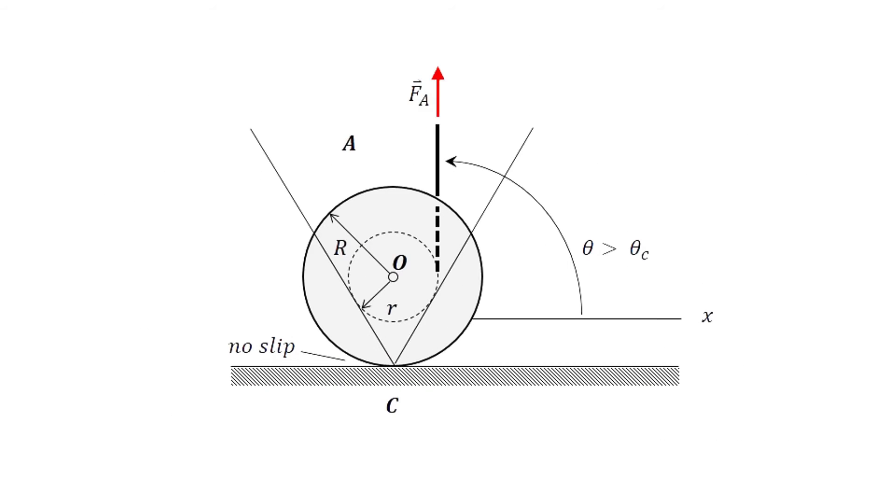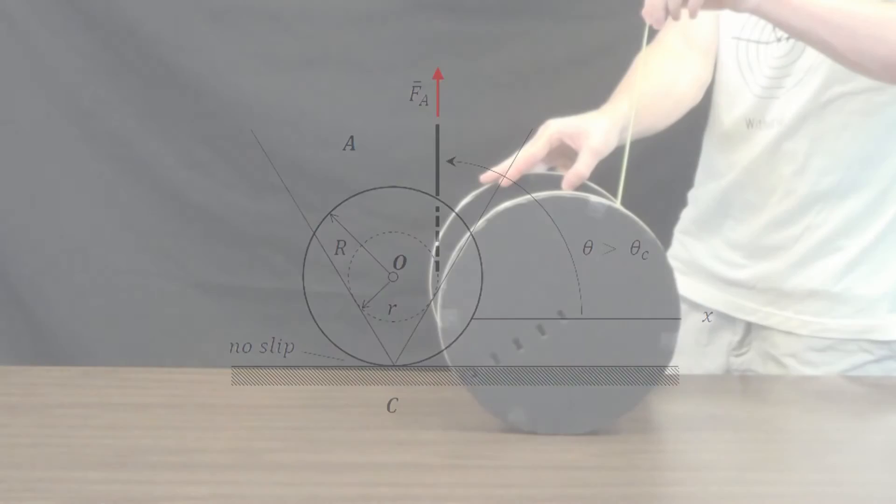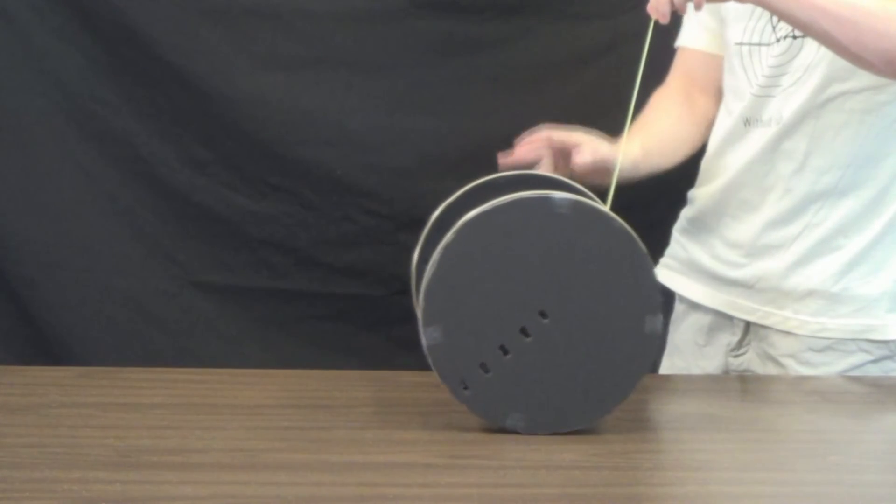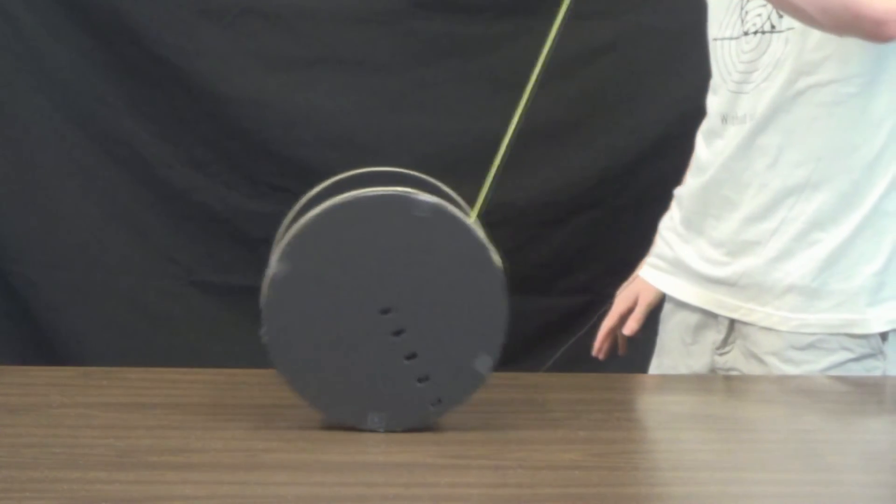The next test will be slightly above the critical angle. As I pull upwards and slightly to the right, the spool will roll counterclockwise and move to the left.